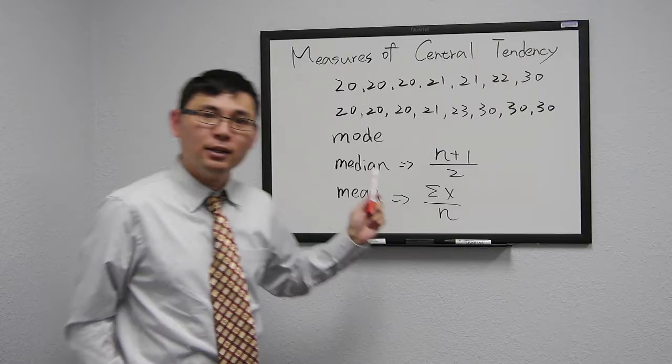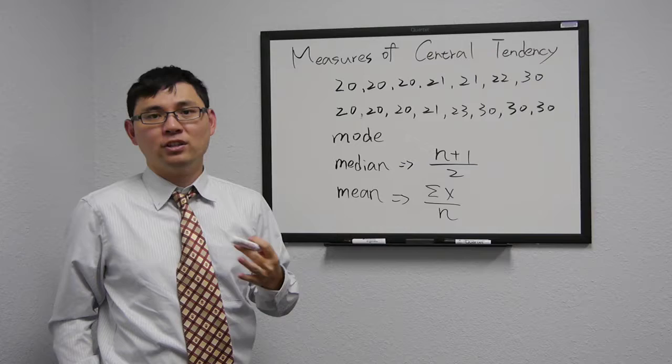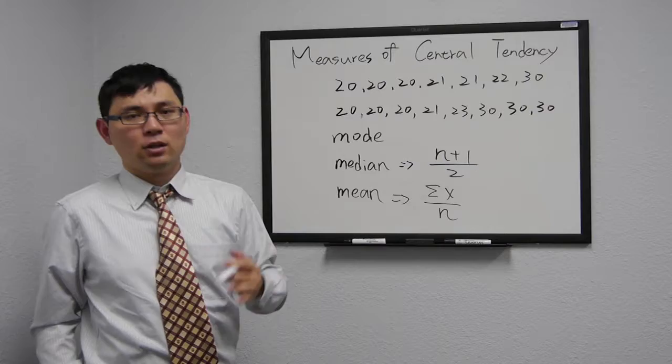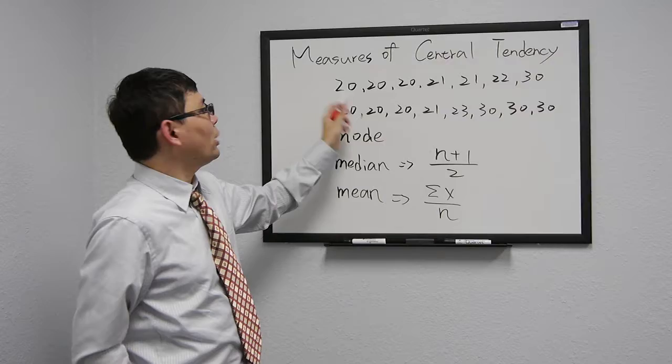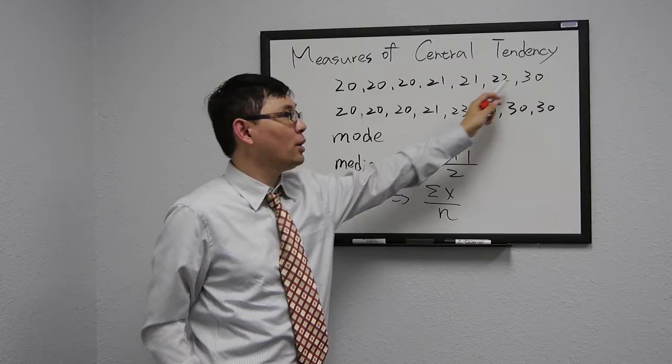Mode is the most frequently occurring number in a distribution. So let's use the first group. We got 20, 20, 20, 21, 21, 22, and 30.